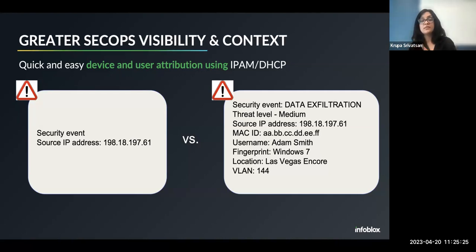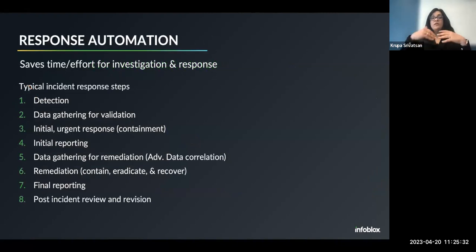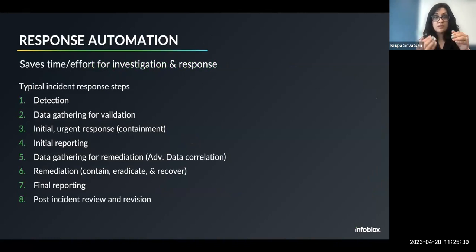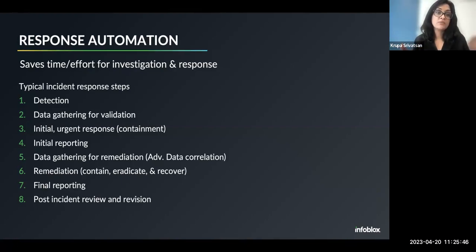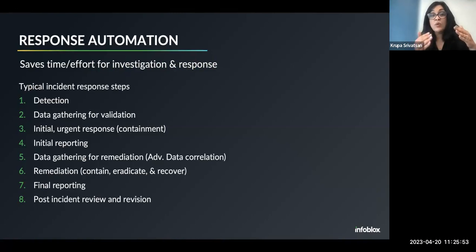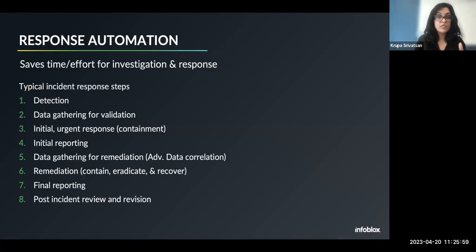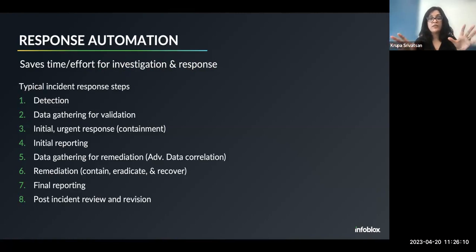Now the security operations team knows which part of the network the activity came from, so it's easy for them to get the device, check if it's been breached or if there's malware running on it, check for patches that haven't been updated, and so on. There's a lot of response activity that can be done when you have this level of visibility and context. This is the response side of DNS detection and response. When you do incident response, there are typical steps: detection, data gathering for validation, immediate containment, long-term remediation and recovery, and final reporting and post-incident review.